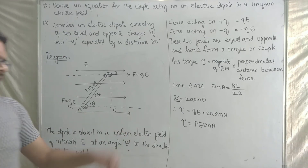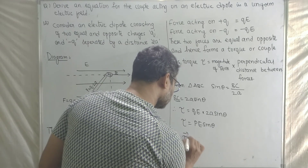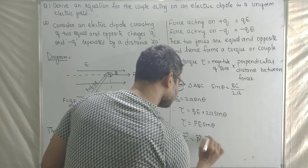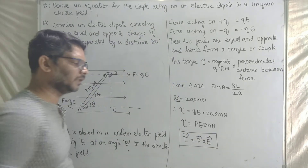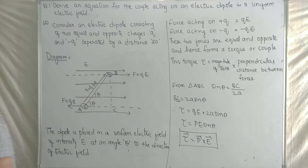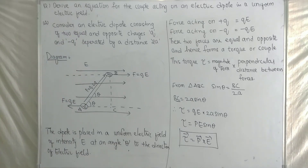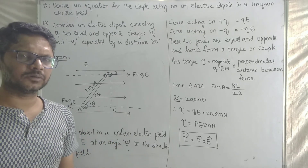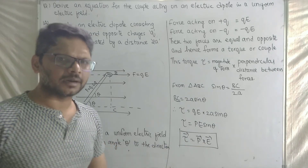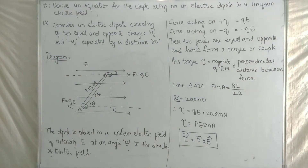So the torque acting on the electric dipole is given by the vector formula: tau bar equals P bar cross E bar. Using the cross product formula, tau equals PE sin theta. The torque tau is perpendicular to both P bar and E bar. This is a fairly easy question — make sure to note these points.